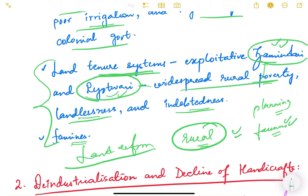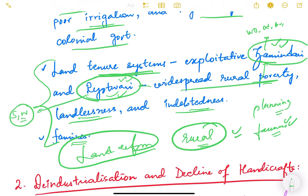We will study the zamindari and ryotwari systems in detail when we cover land reforms. The zamindari system was mostly in West Bengal, Odisha, Bihar, and parts of northern India, whereas the ryotwari system was mostly in south and western India. We will see this in more detail in the land reform lesson.